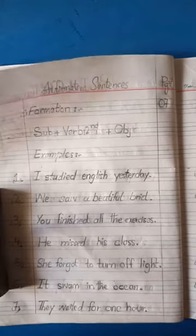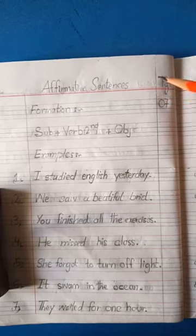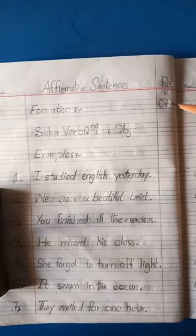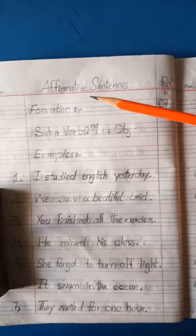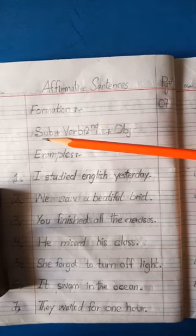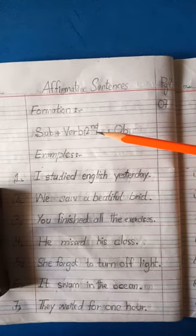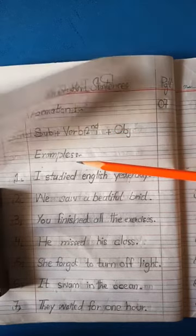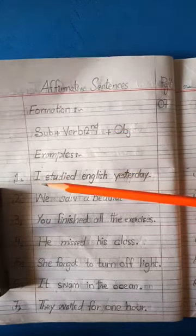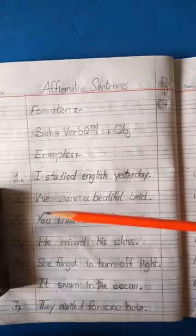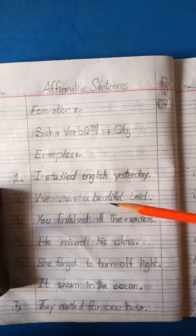Again, maintain your page. Make your second margin line here. Page number will be 7. Dear students, give the heading of Affirmative Sentences. Formation: Subject + Verb 2nd form + Object. Examples: Number 1 — I studied English yesterday. Number 2 — We saw a beautiful bird.